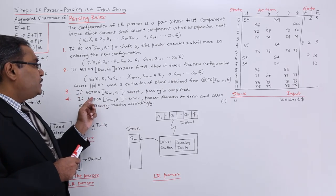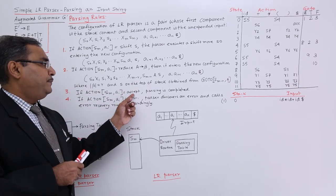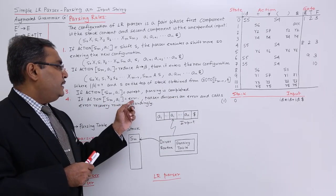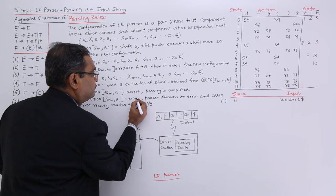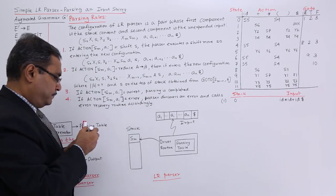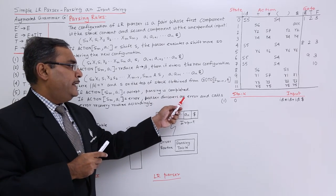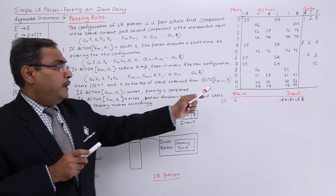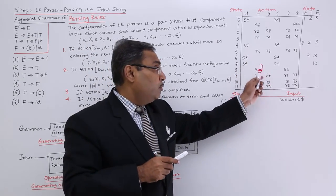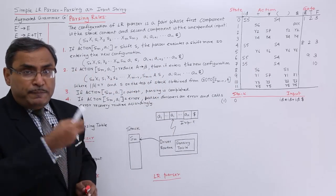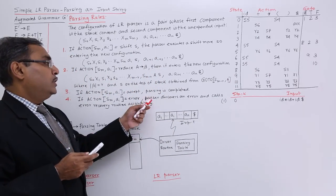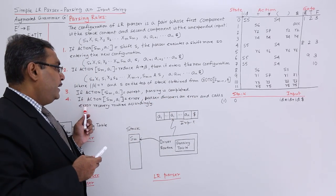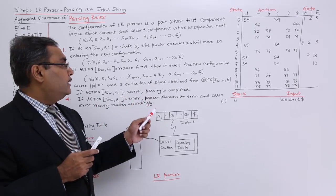Rule number 3: if action[sm, ai] equals 'accept', parsing is completed successfully — the string has been accepted. Rule number 4: if action[sm, ai] produces an error, the parser discovers an error and calls the error recovery routine accordingly. Those are the 4 steps: shift, reduce, accept, and error/reject.